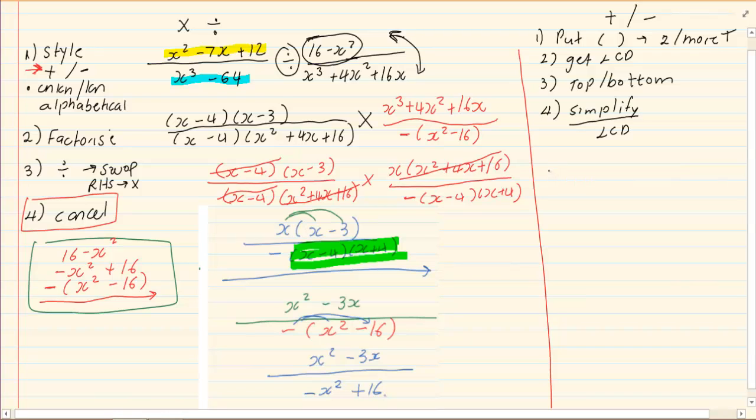So, if I have got x squared minus 16 all over 5x minus 20 minus x squared minus 3x plus 2 all over 3x minus 3.